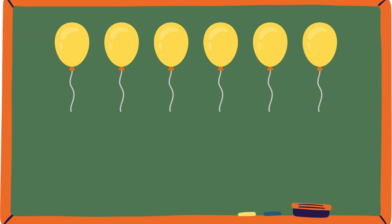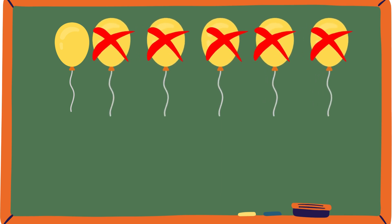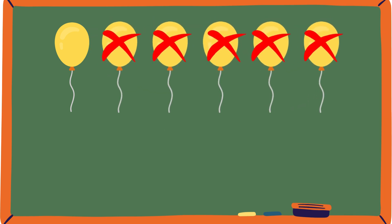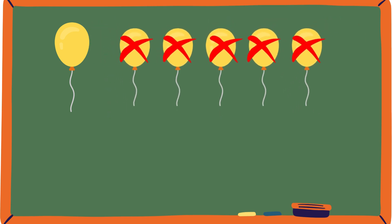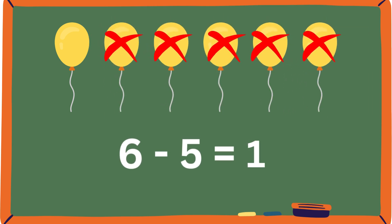Yellow balloons. 1, 2, 3, 4, 5, 6. 6 yellow balloons. 1, 2, 3, 4, 5 get popped. How many balloons are left? That's correct. There's only one left. This is the equation. 6 minus 5 equals 1.